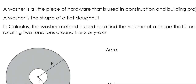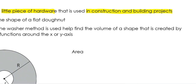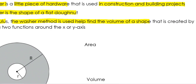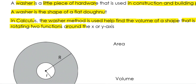For students unfamiliar with a washer: a washer is a little piece of hardware used in construction, and it generally takes the shape of a flat donut. In calculus, the Washer Method is used to find the volume of a shape created by rotating two functions around the x or y axis. The key term here is two functions — when we have two functions, we generally have an area between two curves, similar to what we did in lesson 5.